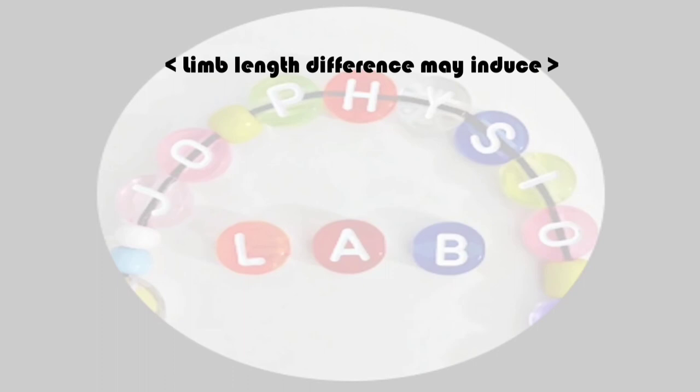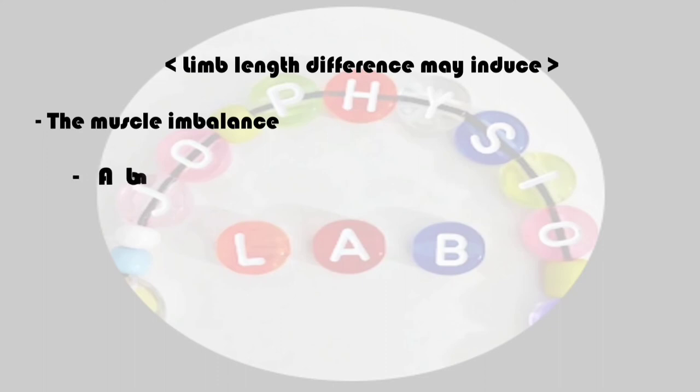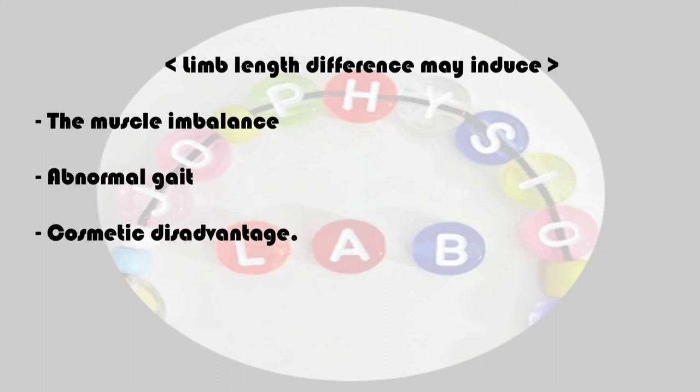Limb length difference may induce muscle imbalance, as well as abnormal gait and cosmetic disadvantages.